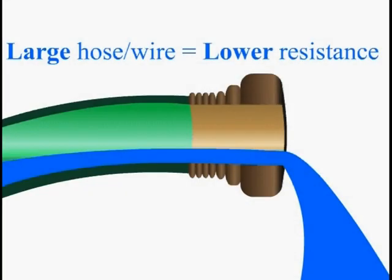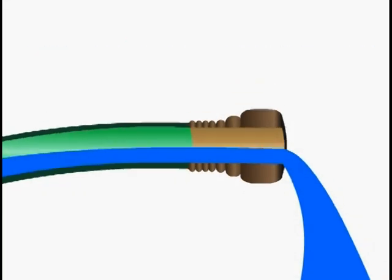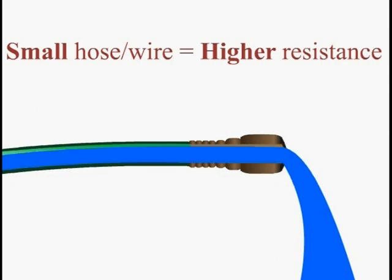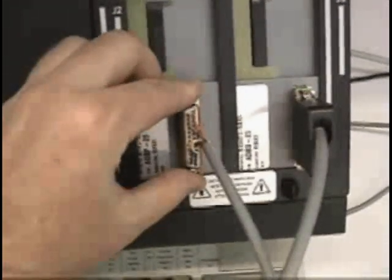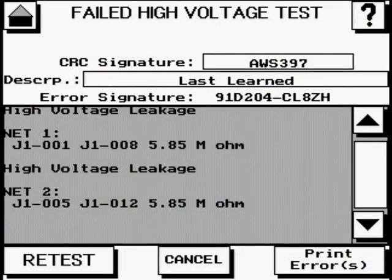In last month's newsletter we introduced the basic concepts of high voltage cable testing using a water hose analogy. This month we'll describe exactly what's going on when you get HIPOD failures.